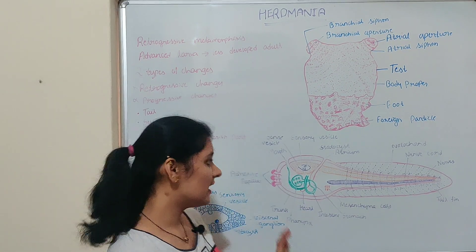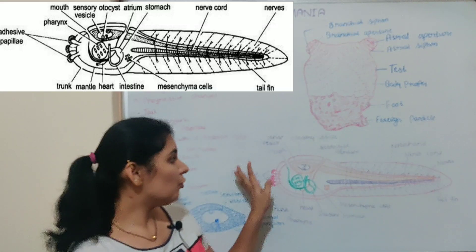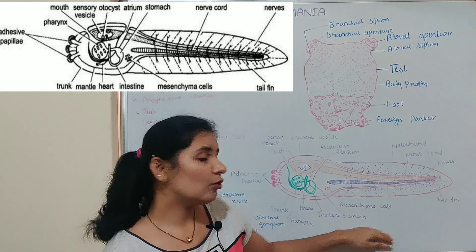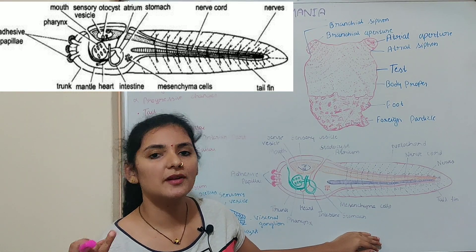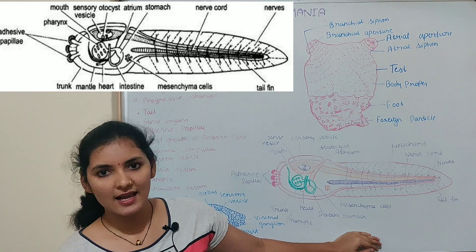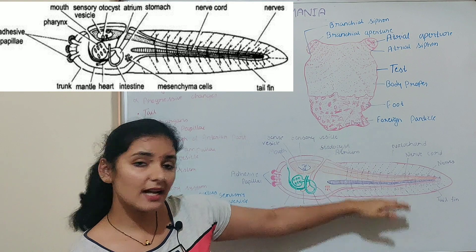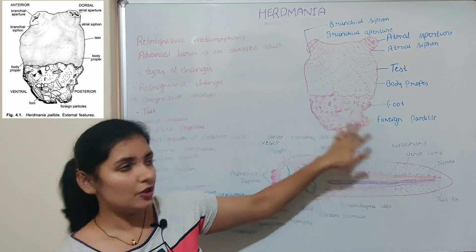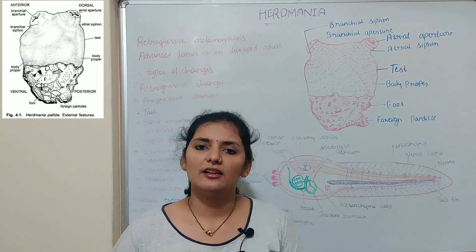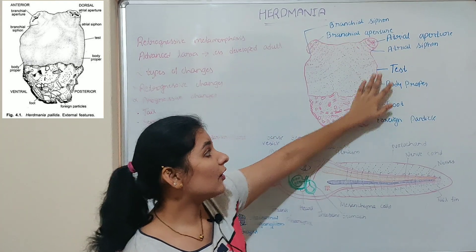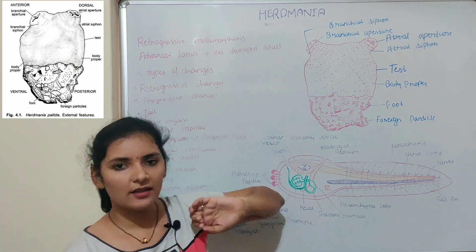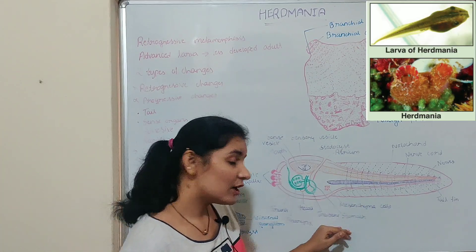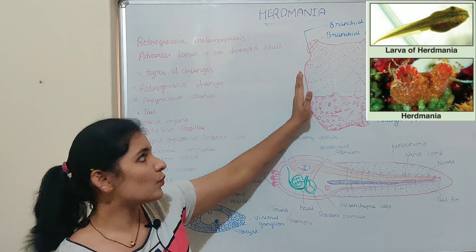Retrogressive metamorphosis takes place in the ascidian tadpole larva of Herdmania. The ascidian tadpole is a highly active, motile, and free-swimming form. It has almost all chordate characters, like presence of notochord, nerve cord, and pharyngeal gill slits. So it is a highly advanced larva. This highly advanced larva develops into an inert, degenerate adult individual. The adult Herdmania is a sessile form, found attached to a substratum, and almost all chordate characters are lost in the adult.